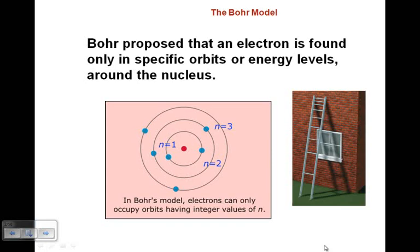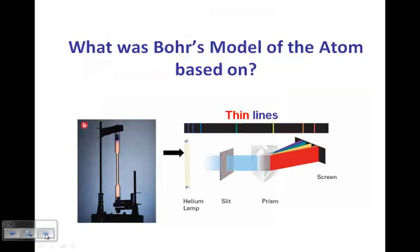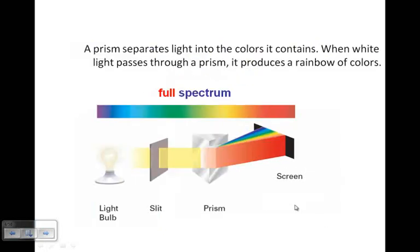So what Bohr said was electrons must be in these discrete energy levels. His model was based on what he saw. If you take a gas, let's say helium or hydrogen, and you energize it with high voltage or electricity, and you look at it through a prism, what you see is these thin lines. We call it the energy emission spectra - you see these thin lines and not a full rainbow like you would expect.